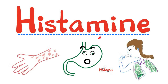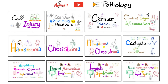We have talked about bradykinin in the previous video. Today, it's time for histamine. Where does this name come from? 'Histo' means tissue, as in histology, and 'amine' refers to its chemical structure — see my organic chemistry playlist. This is my pathology playlist; please watch these videos in order for maximum understanding and retention.